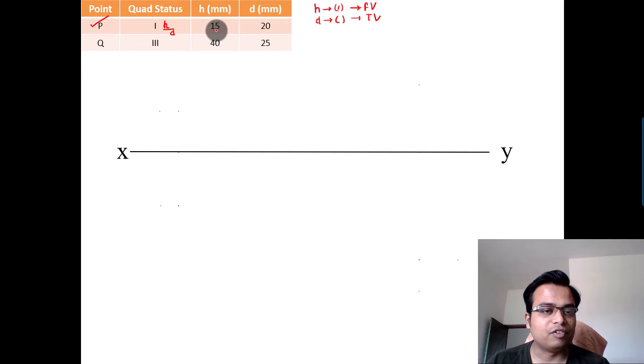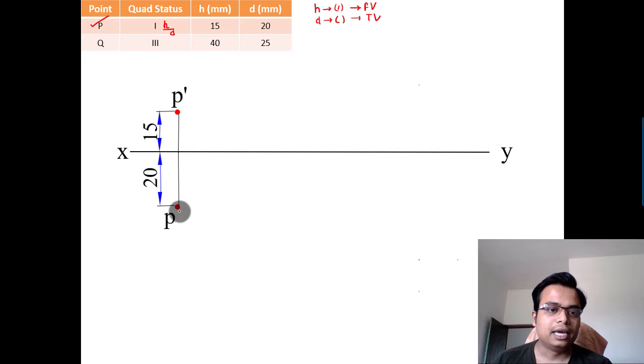So it's going to be 15 above and 20 below: 15 above with a dash and 20 below without a dash. I mean, point P without a dash. And then from here, the distance between the projector P and projector Q has got to be taken as 90 millimeters. So this point over here and this point over here have to be separated by a distance of 90 millimeters.